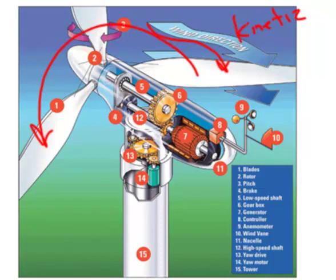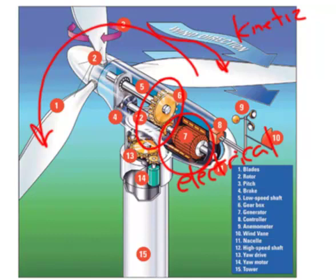Looking inside the generator, we have gears — though some wind generators don't have gears. The rotational kinetic energy from the blades spins the generator, which has magnets moving inside a copper wire field. We generate electricity — electrical energy. In this case, kinetic energy is converted directly into electrical energy without using steam.